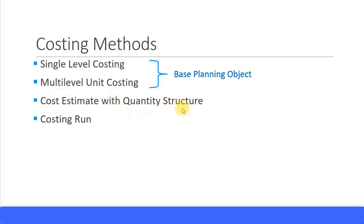Let's look at some costing methods. You have single-level costing, multi-level costing, cost estimate with quantity structure, cost estimate without quantity structure, and then the costing run. We'll come back to those later. Let's focus on single-level and multi-level costing, which can be done using something called a base planning object.